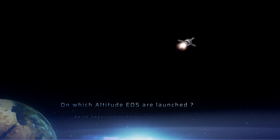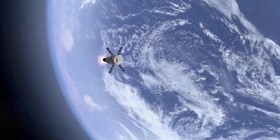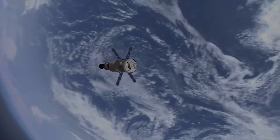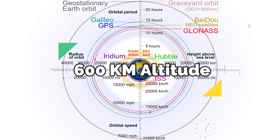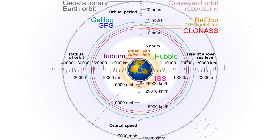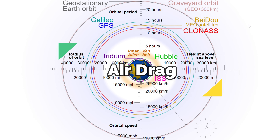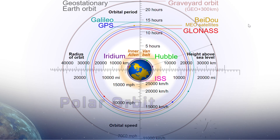So on which altitude are Earth Observation Satellites launched and why? In general, Earth Observation Satellites are launched above 600 km altitude. Altitudes below 600 km are generally avoided because of significant air drag at such low altitude. To get global coverage, the satellite must be in polar orbit or nearby.